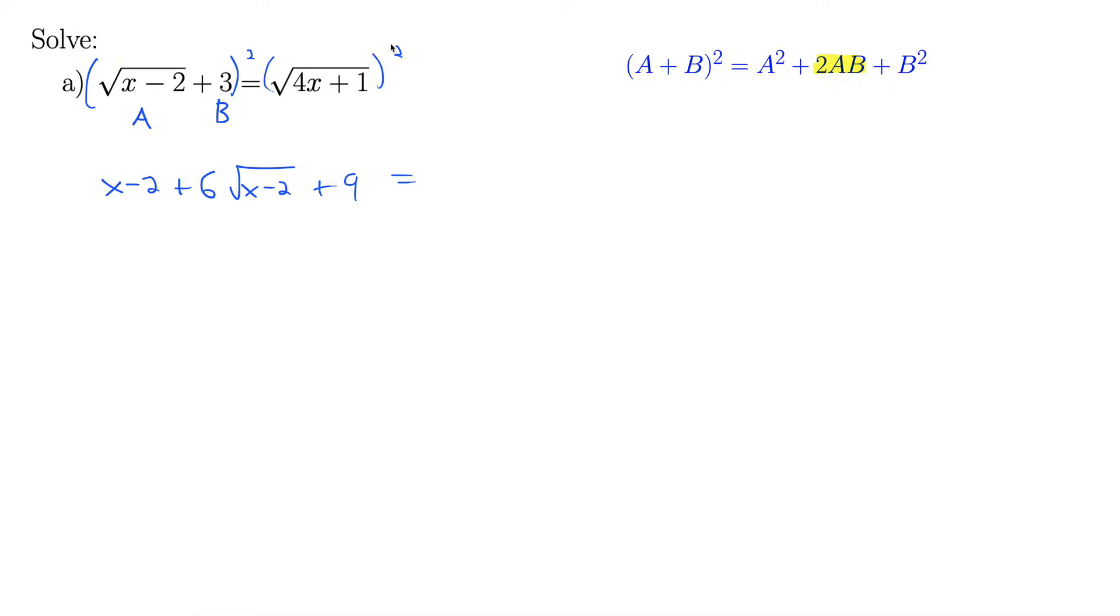We've made progress. We've reduced it from 2 square roots to 1 square root. And now we want to isolate this square root and then square both sides again. So we can rewrite this as x plus 7 plus 6 radical x minus 2 equals 4x plus 1. I just combined like terms there.